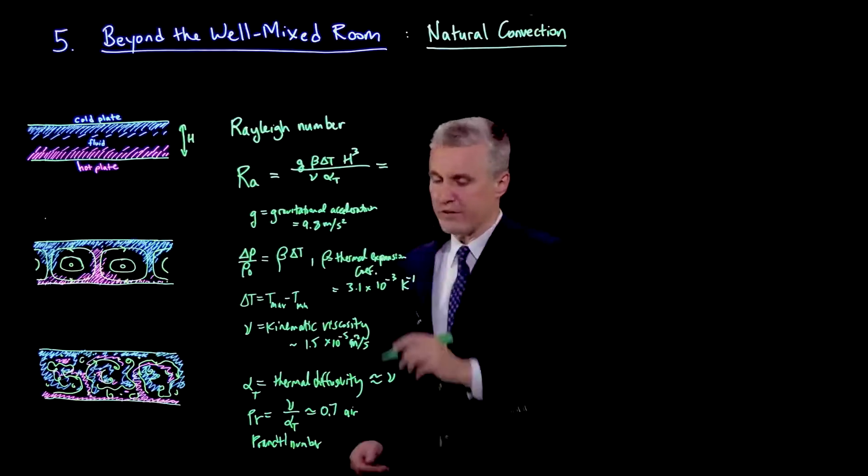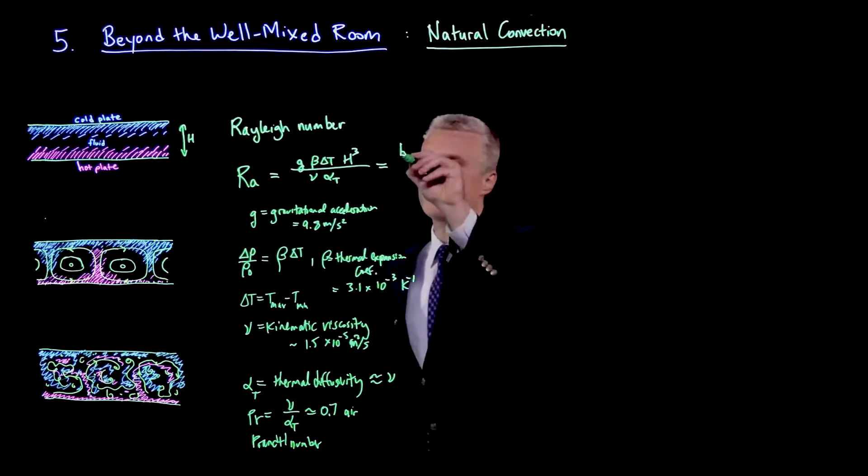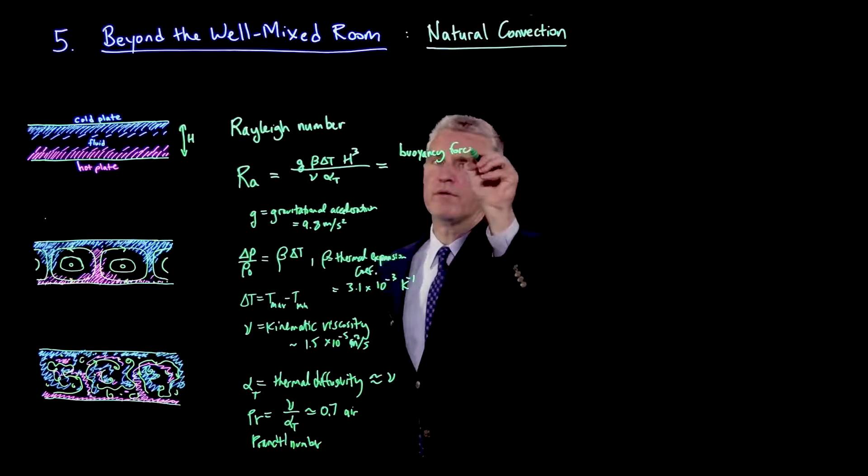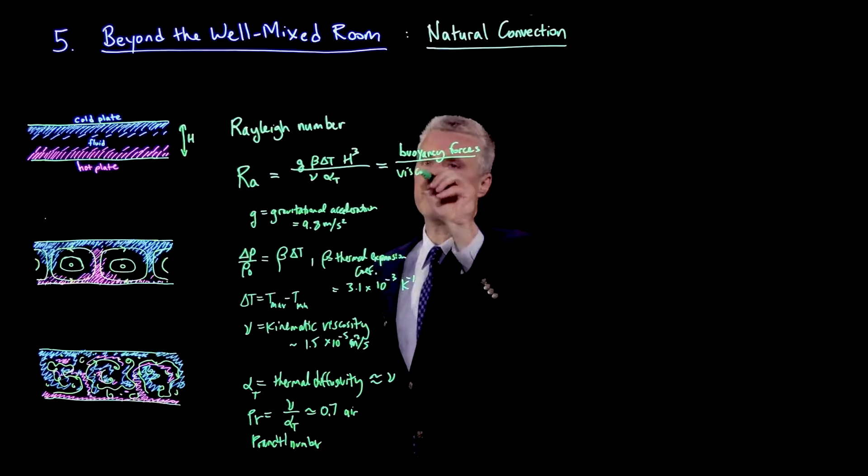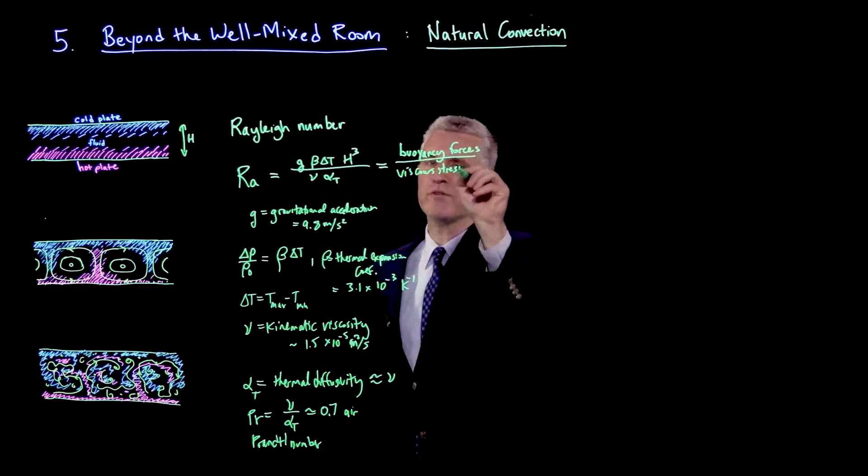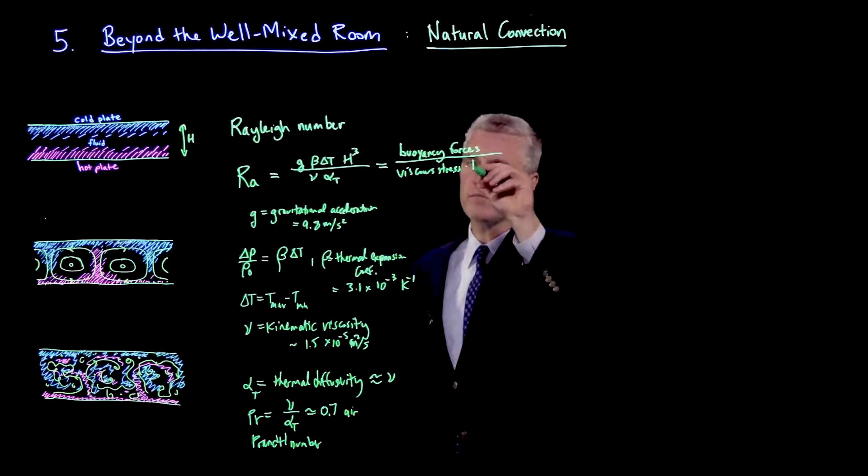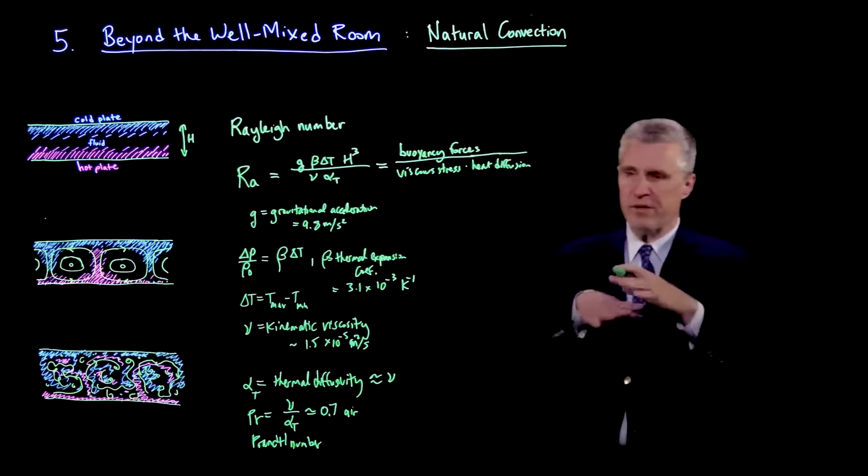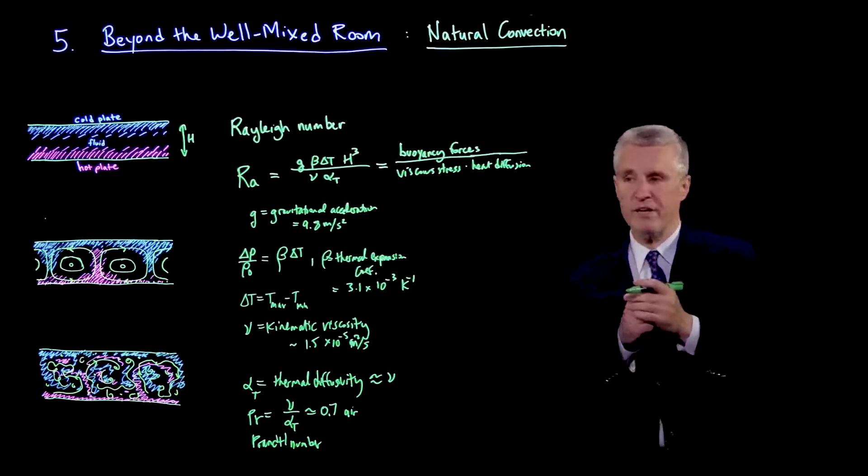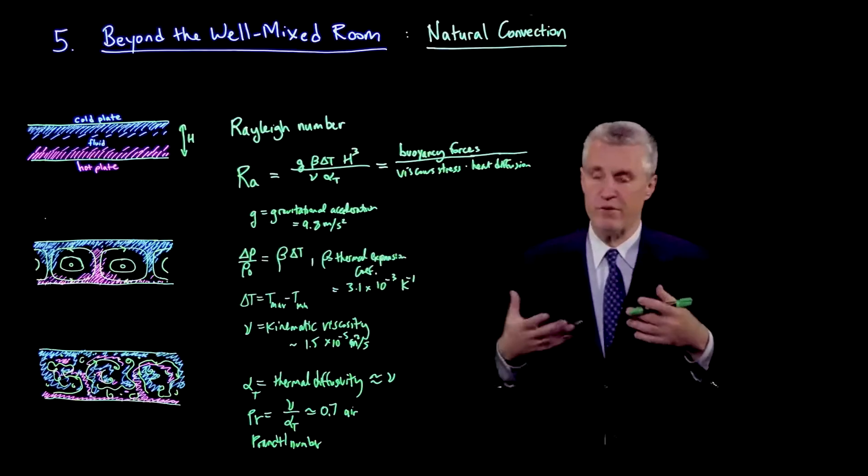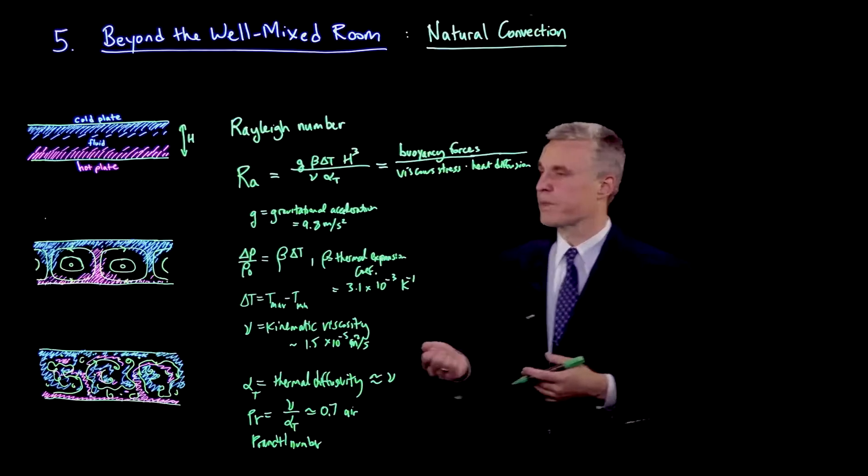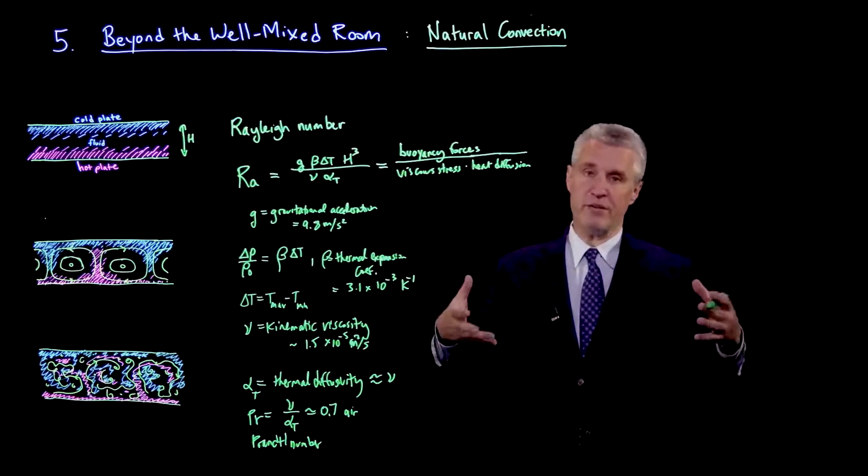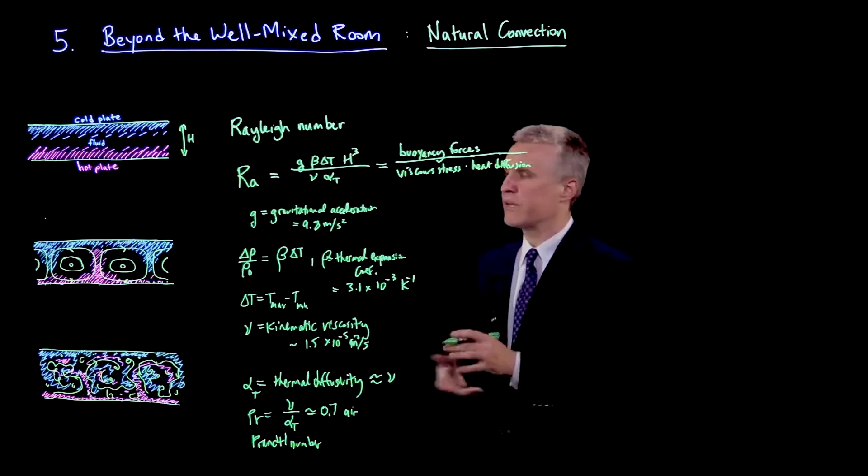The way to think about qualitatively what the Rayleigh number is telling us is the ratio of buoyancy force to viscous stress, which is trying to fight that motion, but also heat diffusion or thermal diffusion, which is also fighting it because it spreads out the temperature gradient. This is a motion that is naturally driven whenever a temperature gradient exists which is unstable. Because beta is typically positive, when you heat the fluid, it expands - that's the case for most gases and even for many liquids.